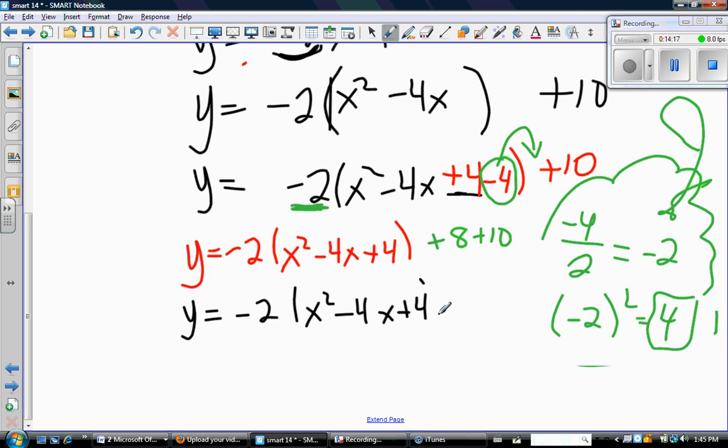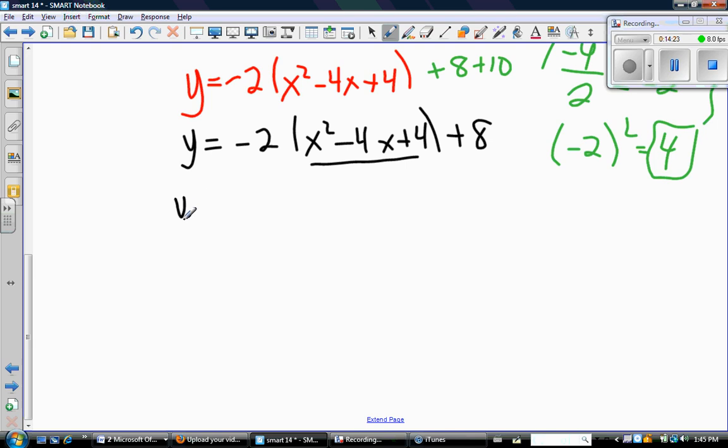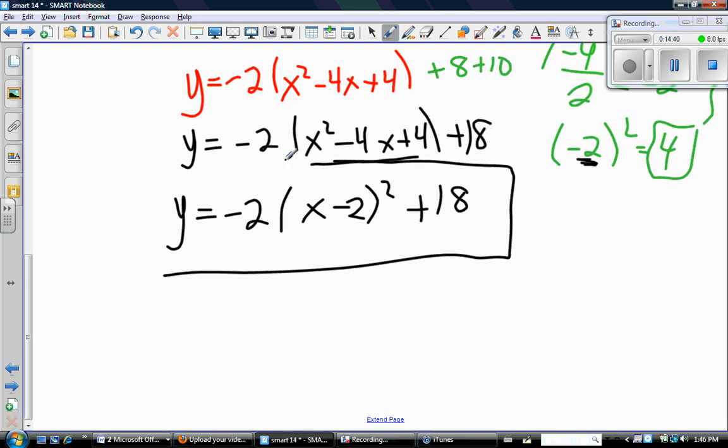So the only thing I have left to do is to factor that trinomial. And again, it's a perfect square trinomial because the number that multiplies to 4 and adds to -4 was the number over here in my brain bubble. So I get -2(x - 2)^2 + 18. And look, I have the exact same equation that I got already, but certainly this one took me longer.